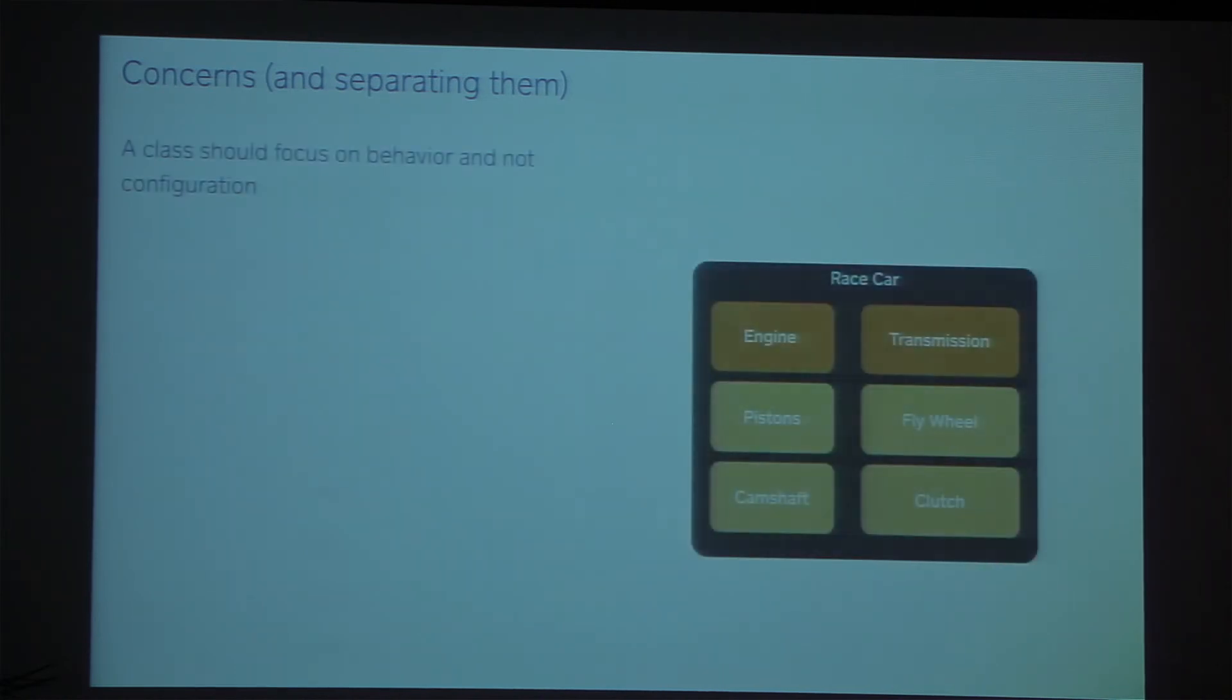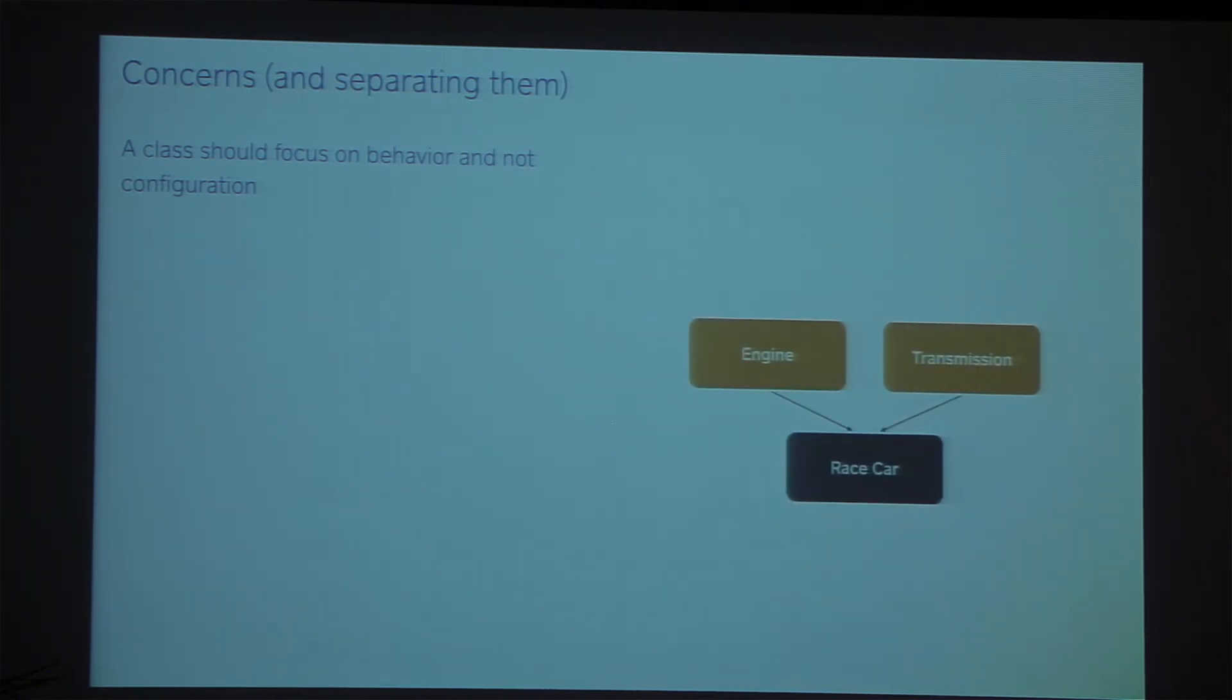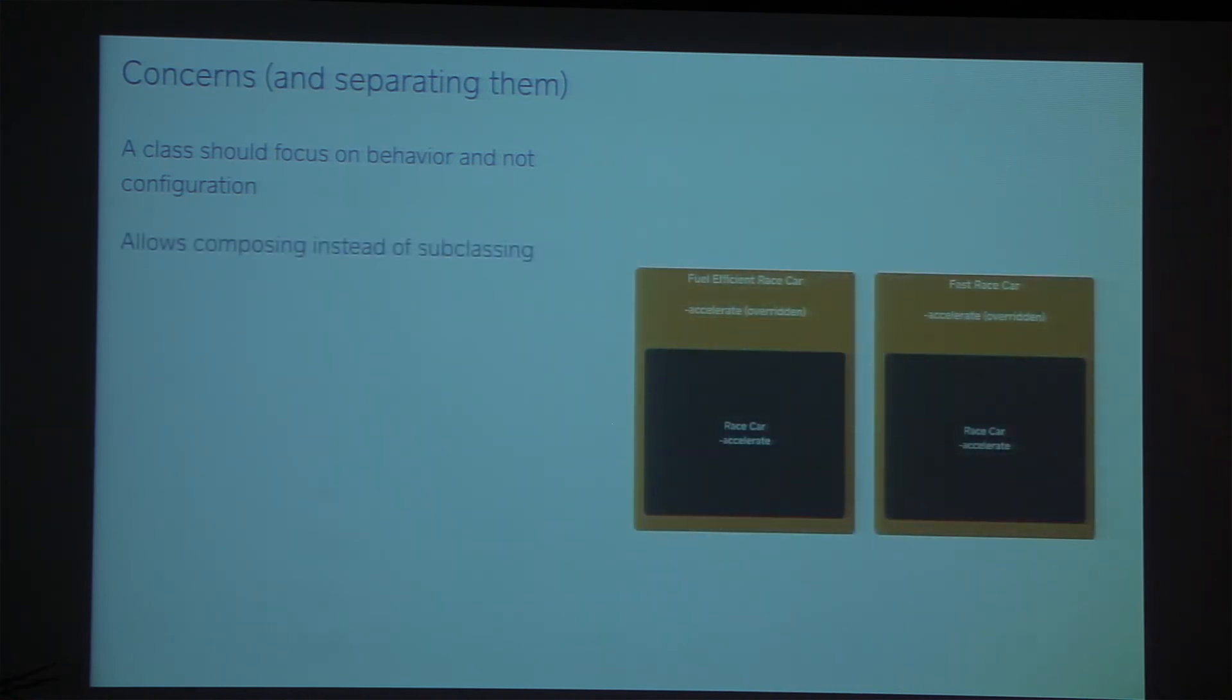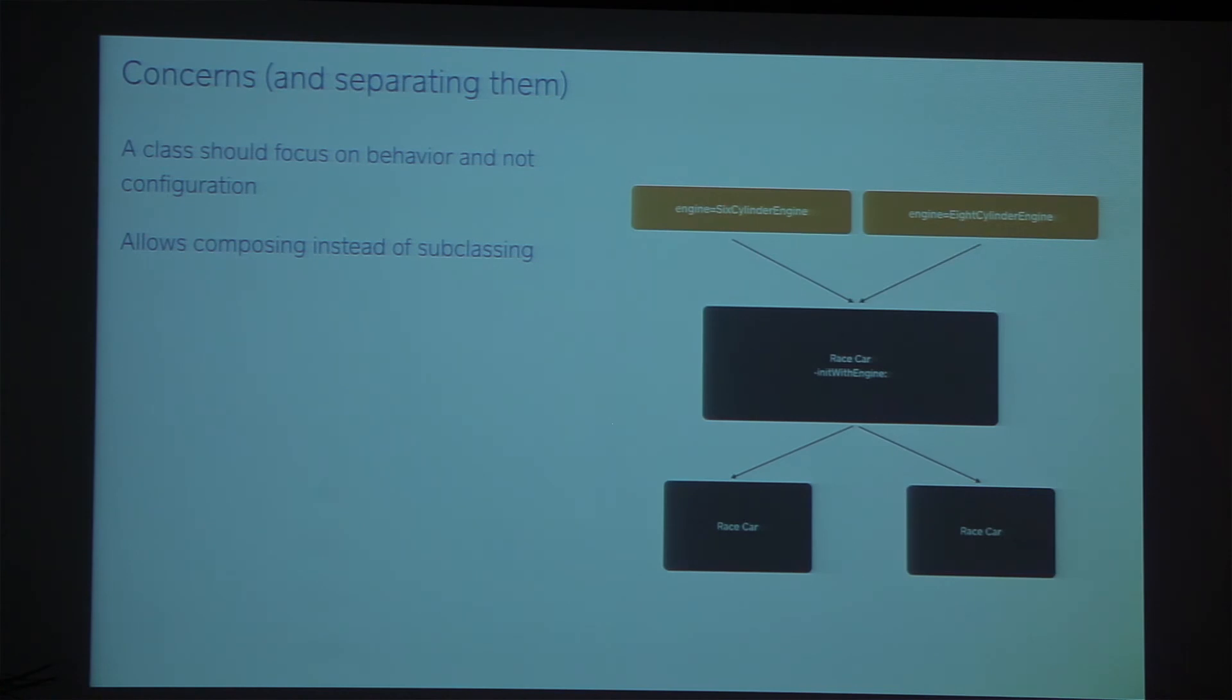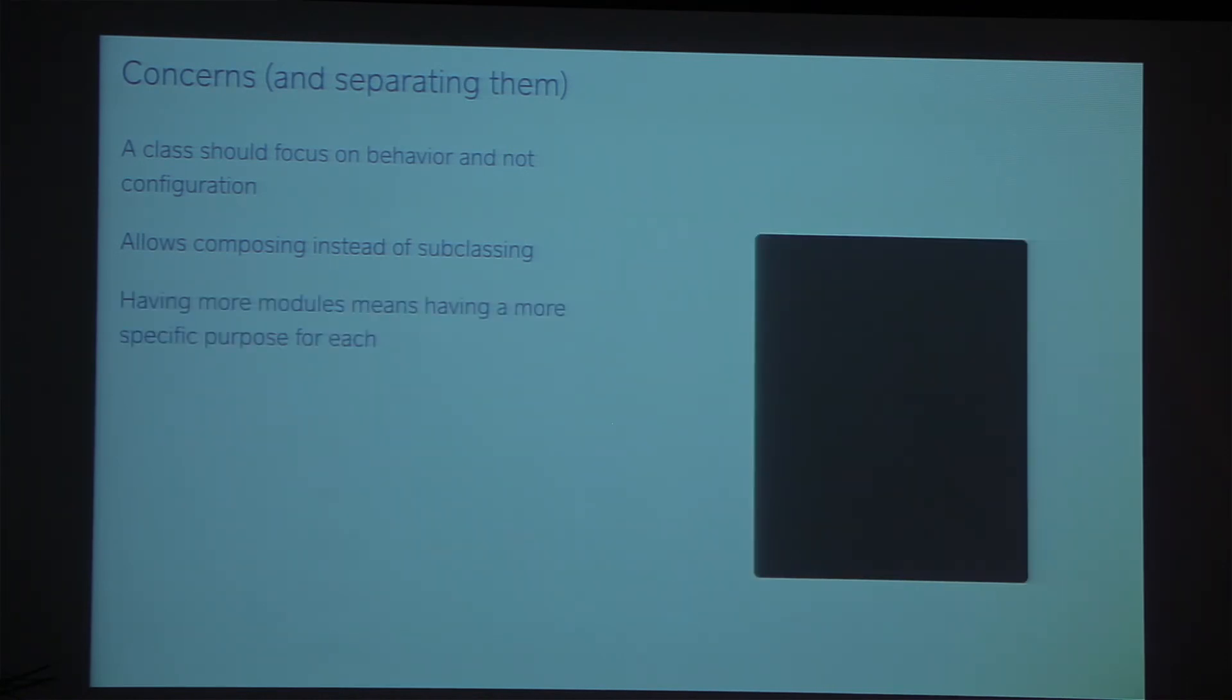And finally, separation of concerns. So you really want a class to focus on being what it is and not on configuration. With dependency injection, your race car can focus on being a race car. It's not about tying together the engine and the transmission and a bunch of other configuration. It also means that you can compose rather than subclassing. And there's some additional talk about this on the website and just on the internet in general, composing will drastically clear up your code. So previously, you might have had to, if you wanted an efficient race car and a fast race car, you might have had to subclass each and then override the accelerate method. And you have some weird behavior in there. Your tests have to be re-added. With dependency injection, most of your code stays the same. You have a race car and you just create a new engine that has the new behavior. It's well contained to that engine. And again, because you're going from one big component to a bunch of little components, it's much easier to reason about what each of those pieces does.